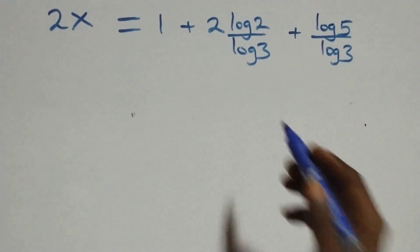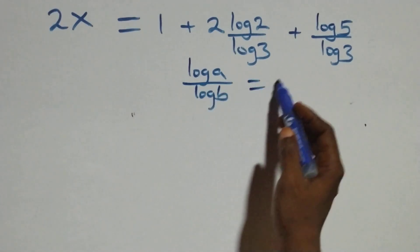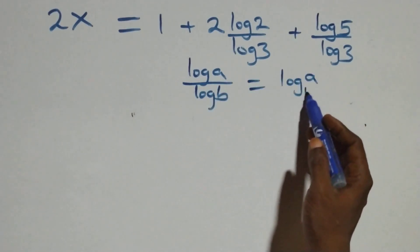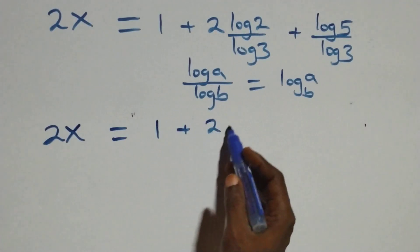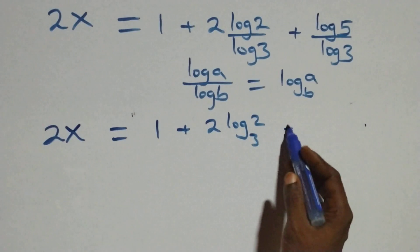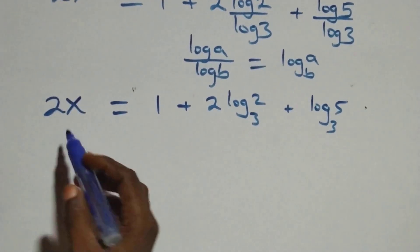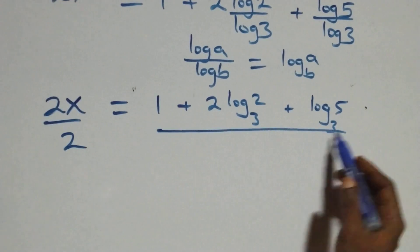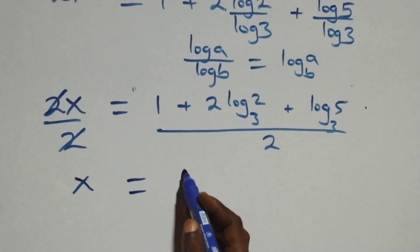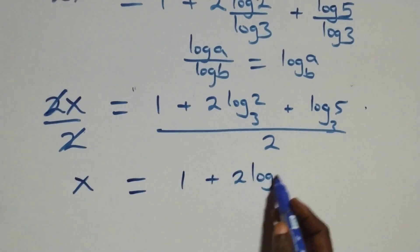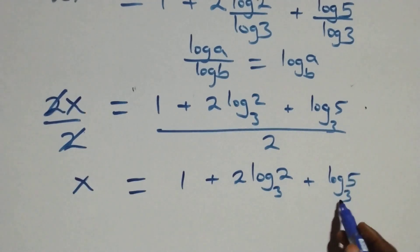We now apply the change of base rule: log A over log B is the same as log A to base B. So this becomes two x equals one plus two log two base three plus log five base three. Dividing both sides by two, the two cancels on the left and we have x equals one plus two log two base three plus log five base three, all over two.